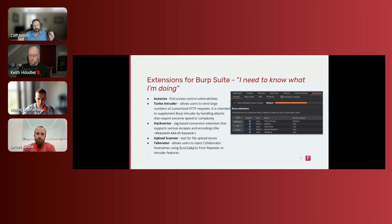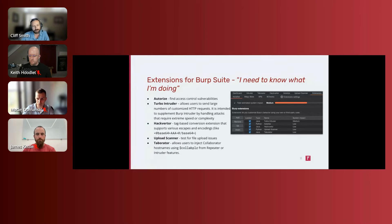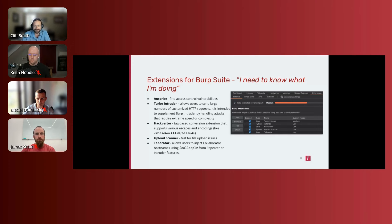Turbo Intruder is a Python-based extension providing an Intruder-like engine that lets you write custom logic inside your requests. One failure mode when working with Burp is getting lazy and writing a Python script using 'requests' to generate traffic proxied through Burp. But if you understand how to use Turbo Intruder and know the API, you can stay within the Burp interface and have access to the full Burp API — making it a big efficiency win.